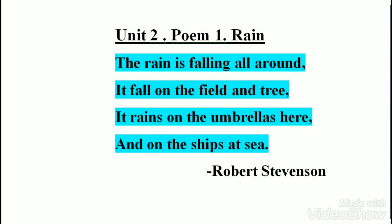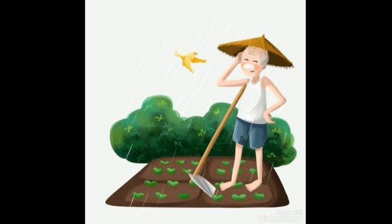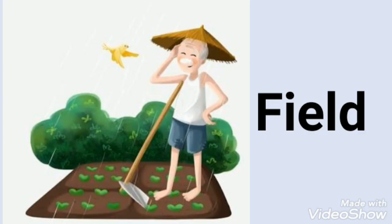Explanation. The poet Robert Stevenson says rain is falling all around — rain is falling everywhere. Rain is falling on the field. This is the image of a field. Rain is falling everywhere. So, rain is falling on which places? Rain is falling on the field.